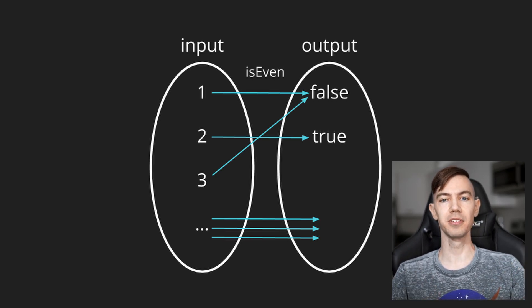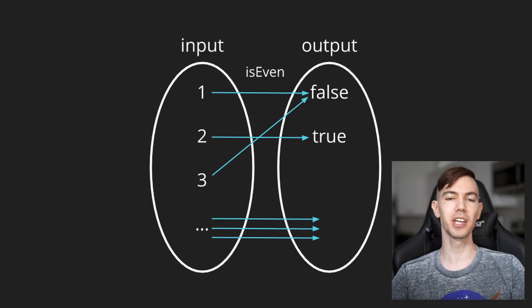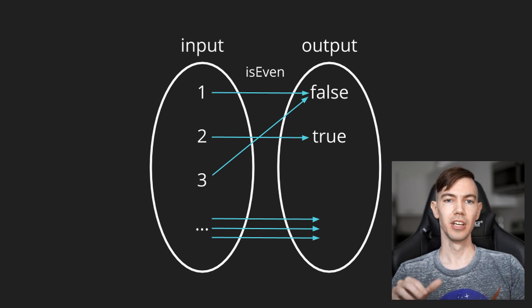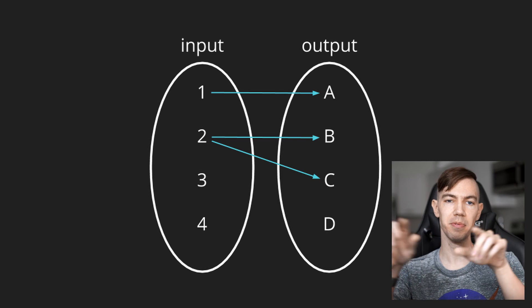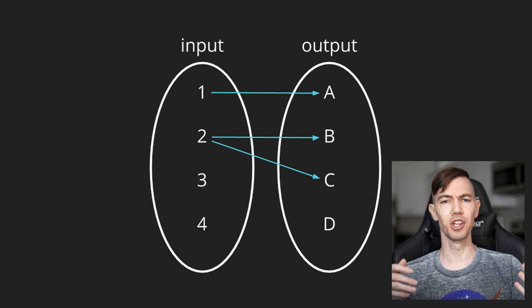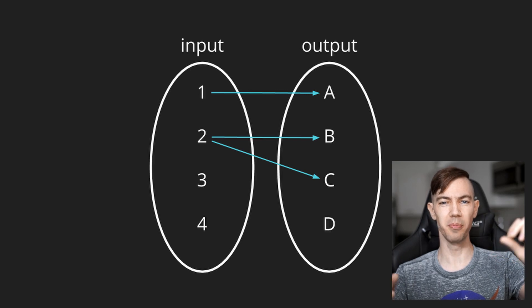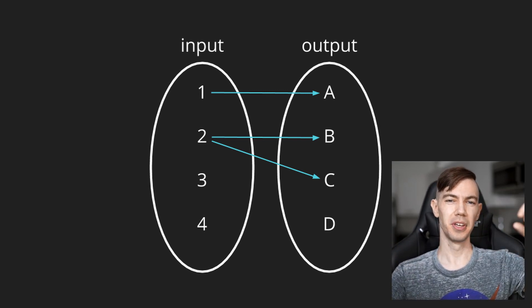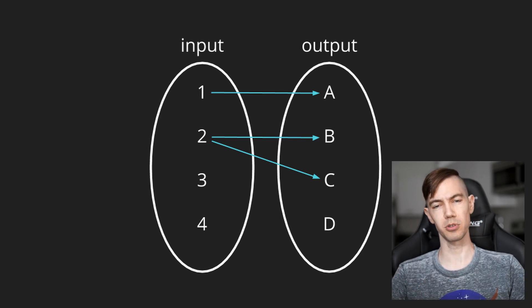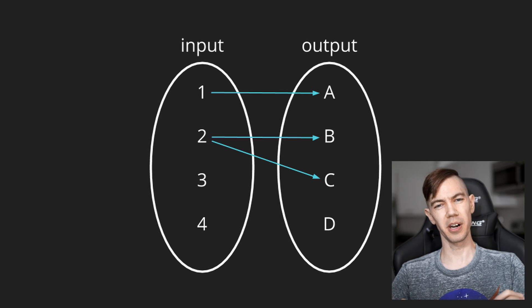Sometimes functions that follow these rules are called one-to-one. Let's look at what violations to these rules would look like. Here we have an example where we take a set of inputs and map them to a set of outputs. The number two as an input maps to multiple different output values, and three and four have no mapping at all. When a function violates either of those two rules, it's called a partial function. One real-world example of a partial function is a function that divides by the input you feed into it — this leaves zero without any mapping.